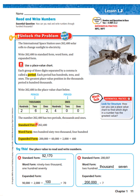The number 262,400 has two periods: the thousands and the ones. In standard form, we write 262,400. In word form, we write it out: two hundred sixty-two thousand four hundred. In expanded form — think of it as stretching the number like a rubber band — you'd write 200,000 plus 60,000 plus 2,000 plus 400.